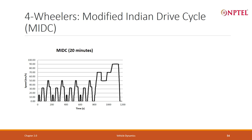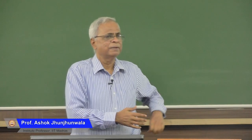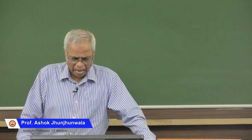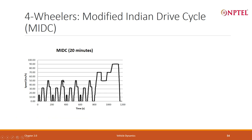Let me come to a sedan. This is a very common drive cycle used in India called the Modified Indian Drive Cycle. This has been defined by various regulatory agencies. It is a 20-minute cycle for cars. It was originally the India Drive Cycle, then modified by looking at how vehicles actually travel. It features a lot of stop-and-wait — it drives, then stops, drives and stops. That is very common in city driving.